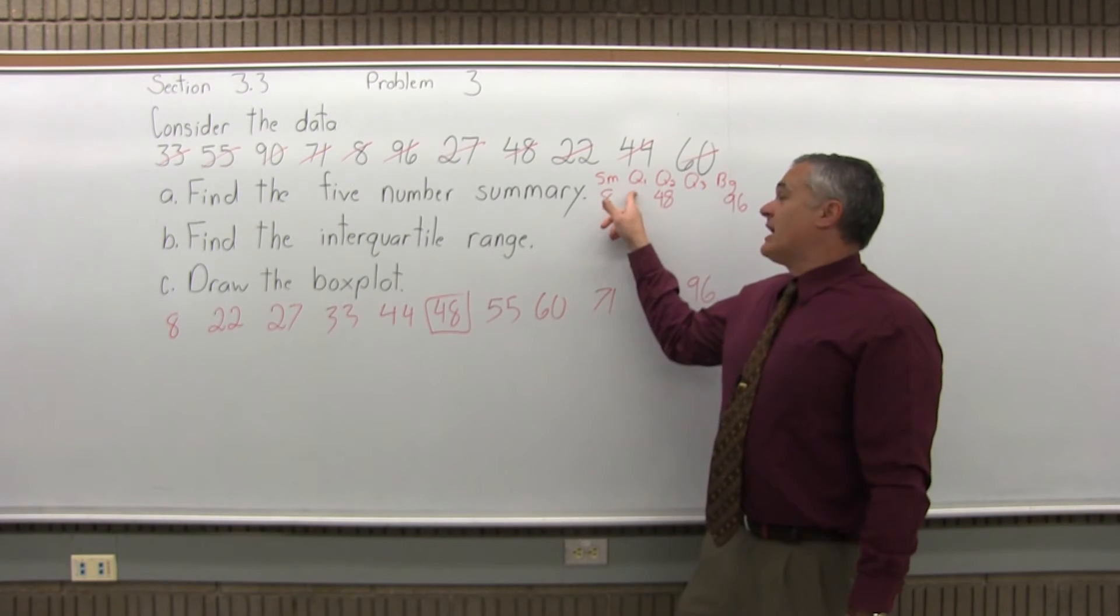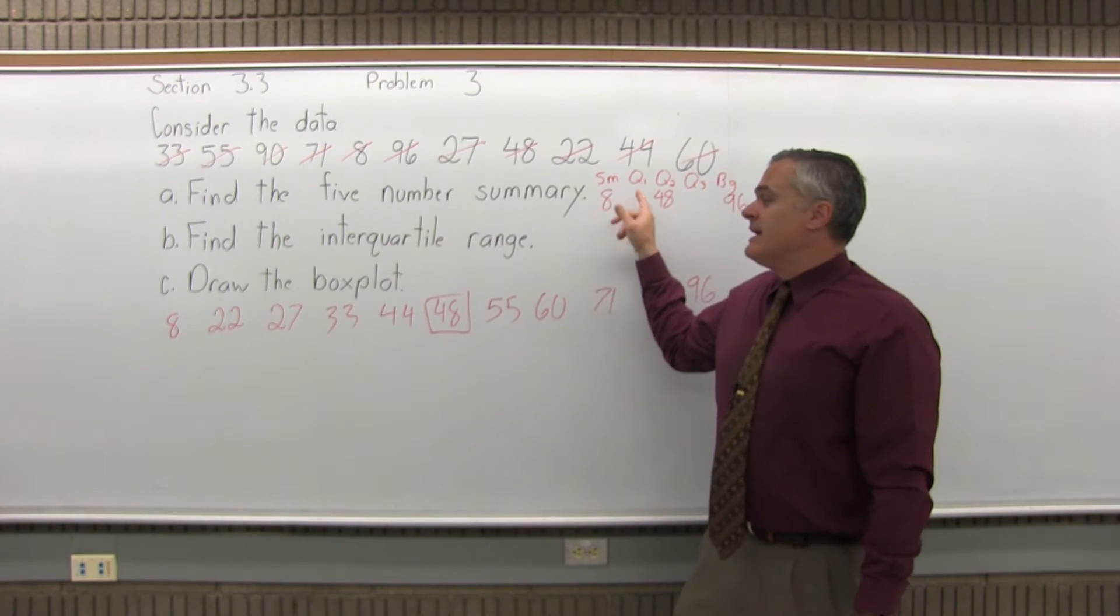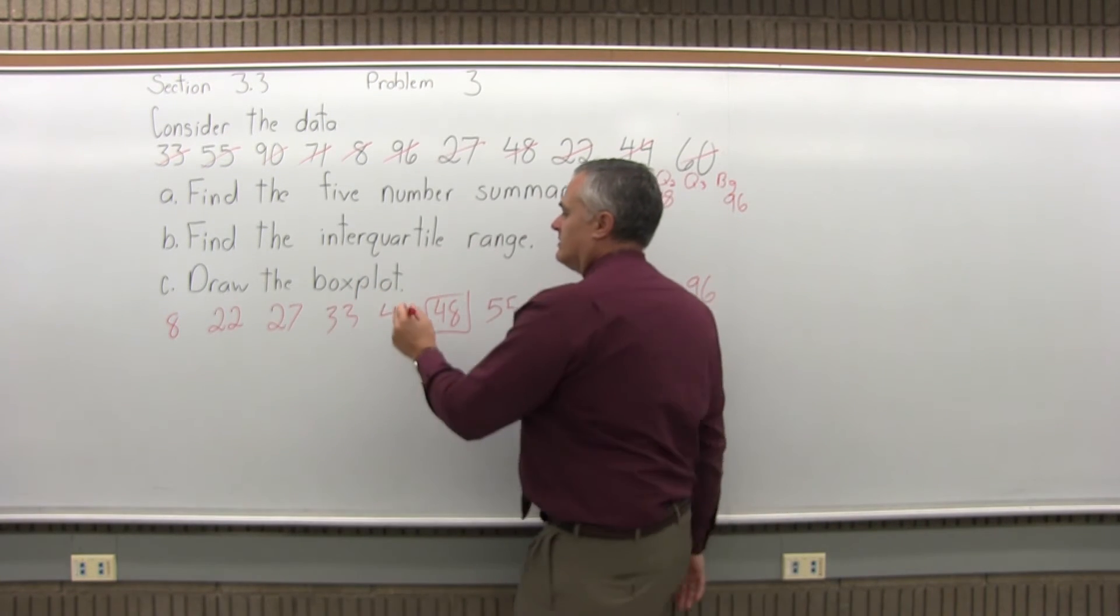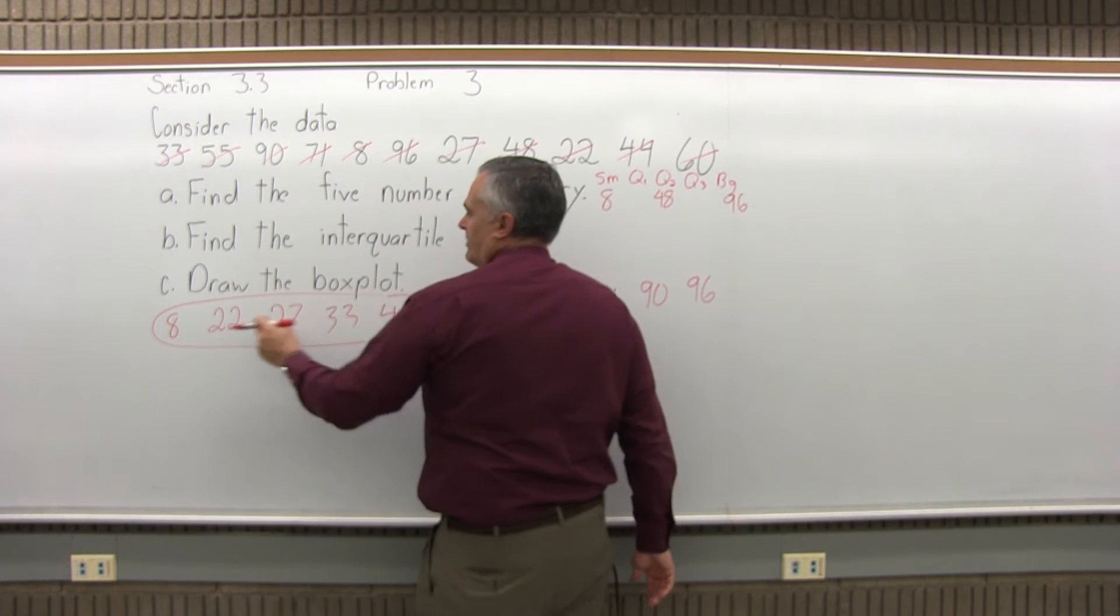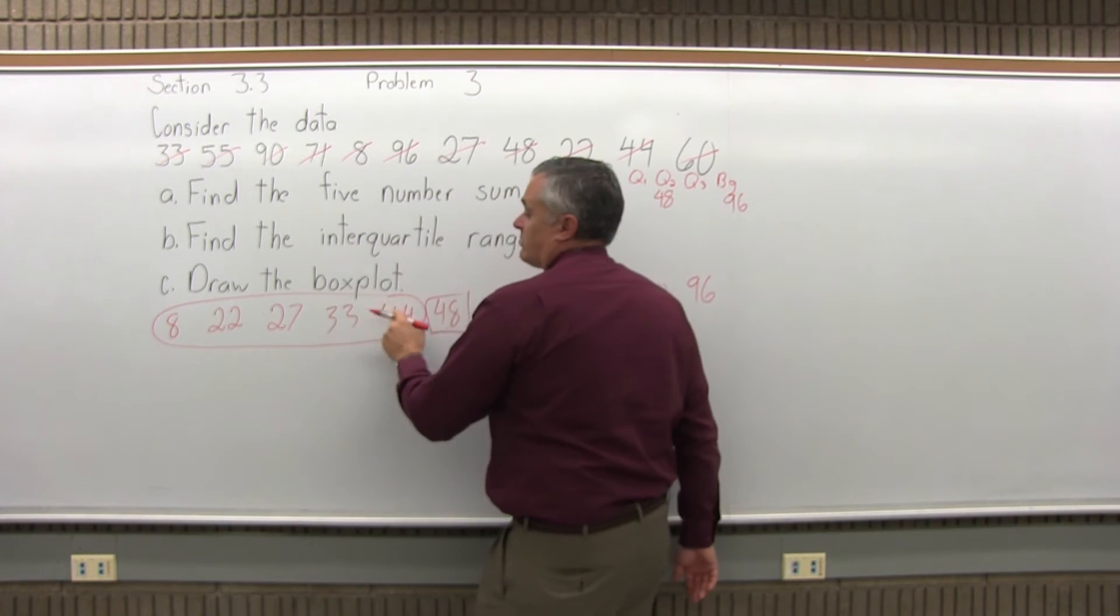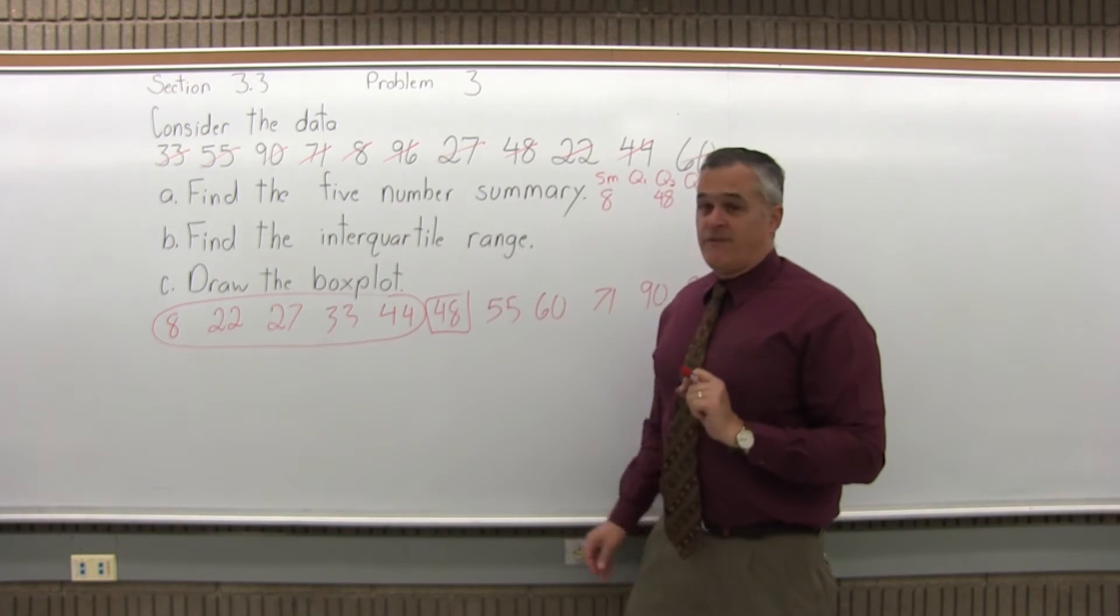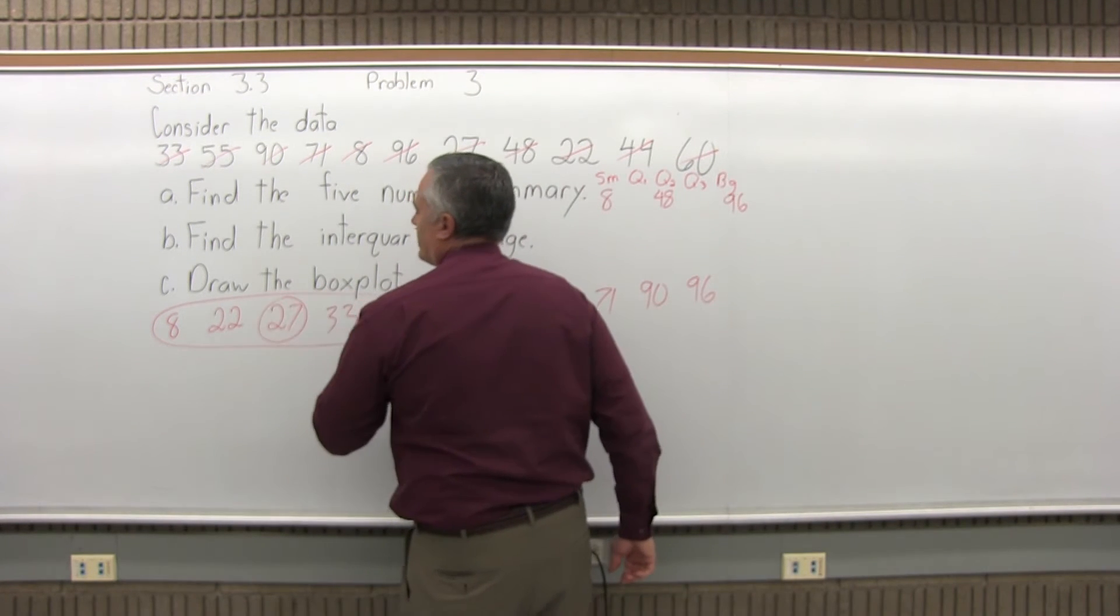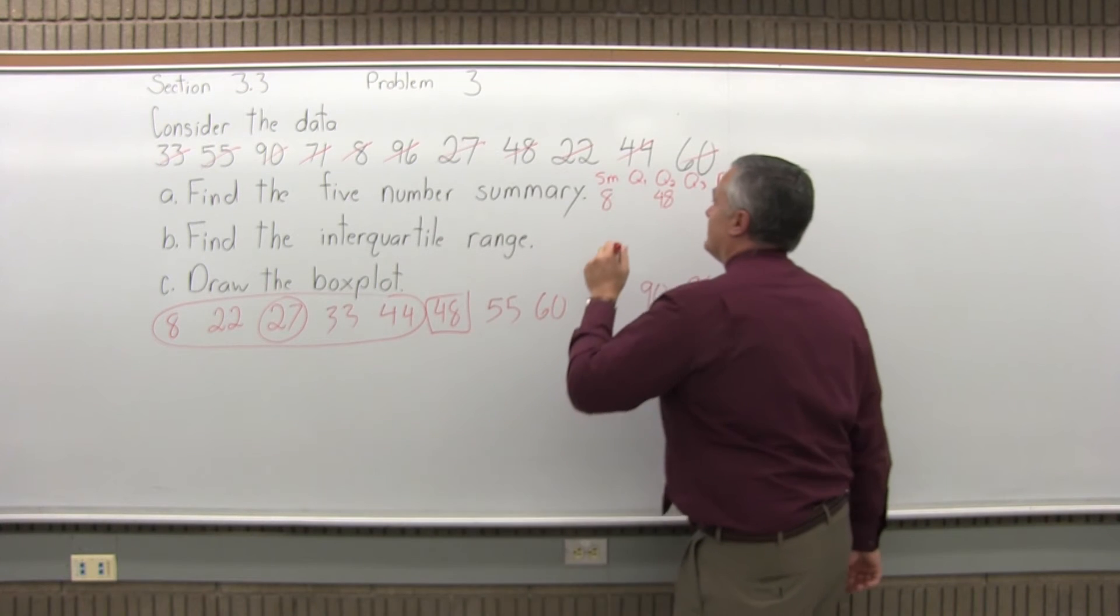Now we can find Q1. Q1 is the median of the smaller half of the data, not including Q2. So the smaller half would be 8, 22, 27, 33, and 44. There are five data values there. Five is odd. There's one value right in the middle, which would be 27. That's Q1.